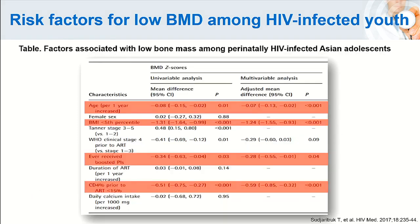The factors that contribute to low bone mineral density in our population include increasing age, wasting syndrome or BMI below the 3rd percentile, ever having been exposed to a PI-based regimen, and very poor immunological status prior to ART initiation.